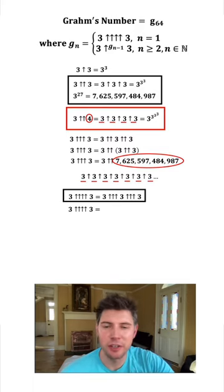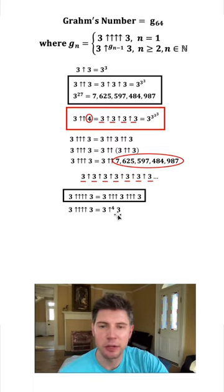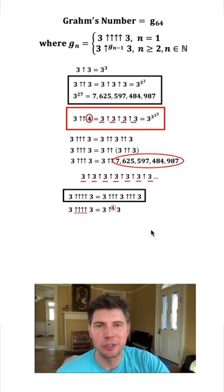There's a shorthand notation for this. Since this has 4 arrows, you can write that with an up arrow with a 4 right there. And this 4 signifies how many arrows there are.